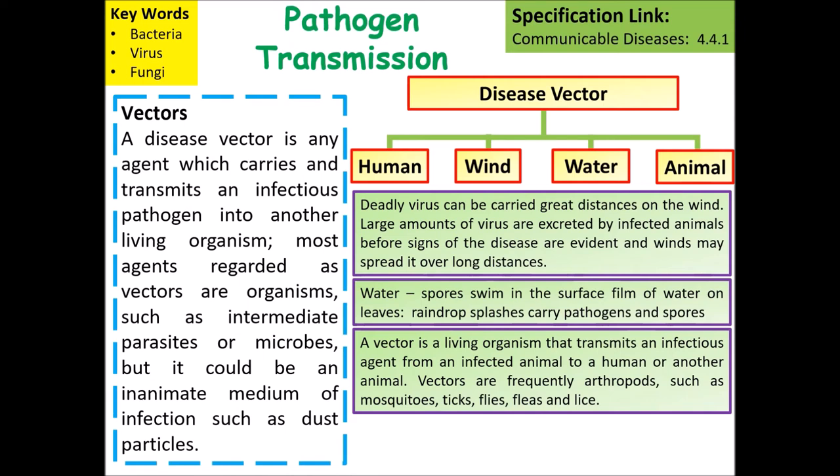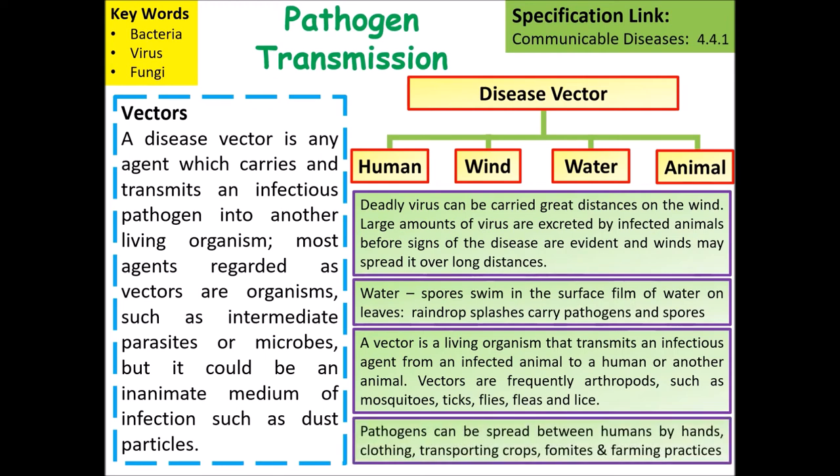Living vectors include mosquitoes, fleas, ticks and lice. Pathogens can also be passed by humans, either on hands, clothing, by transporting crops or through various farming practices.